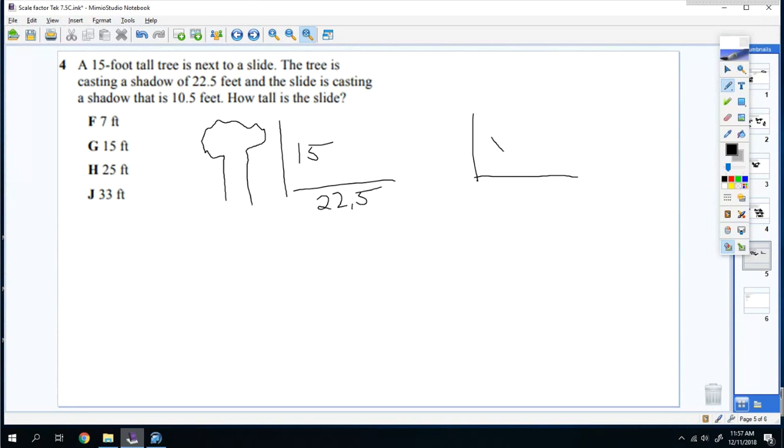The slide, I don't know how tall it is, but the shadow is 10.5. So I'm going to do X over 15 is equal to 10.5 over 22.5. And you cross multiply and divide, you get X equals seven.